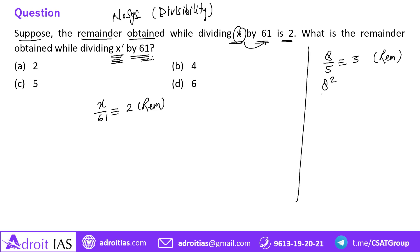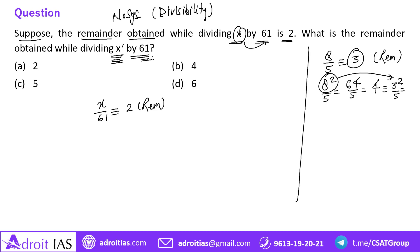When we divide 8² by 5, so 8² is 64, and 64 divided by 5 gives remainder 4. This remainder 4 represents 3² divided by 5 — because when we raise the base to a power, we raise the remainder to the same power. Since 3² = 9 is bigger than 5, we divide again by 5.